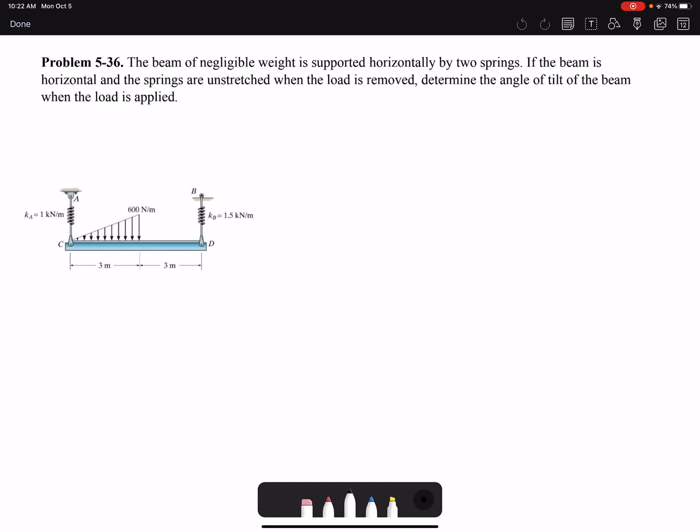Hello everyone, in this video we are going to solve Problem 5-36 of Chapter 5. The beam of negligible weight is supported horizontally by two springs. If the beam is horizontal and the springs are unstretched when the load is removed, determine the angle of tilt of the beam when the load is applied.